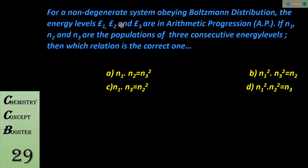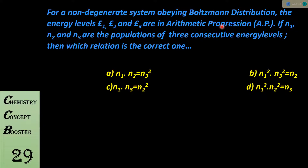The question says: for a non-degenerate system obeying Boltzmann distribution, the energy levels ε1, ε2, and ε3 are in arithmetic progressions. If n1, n2, and n3 are the populations of three consecutive energy levels — n1 corresponds to ε1, n2 to ε2, and n3 to ε3 — then which relation is the correct one?